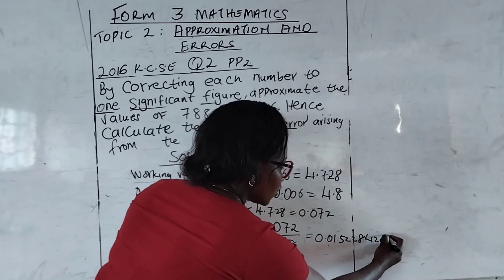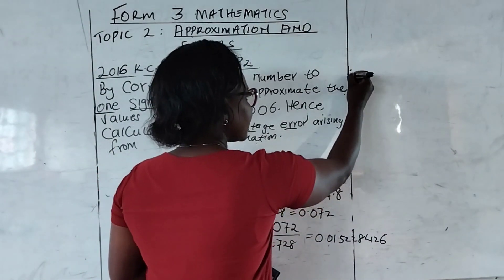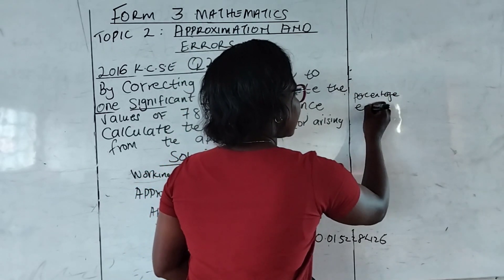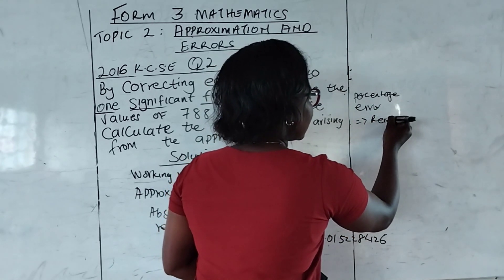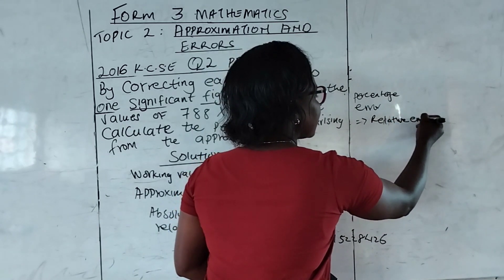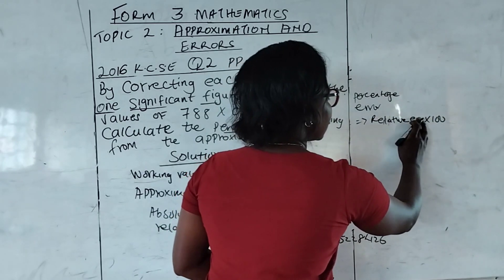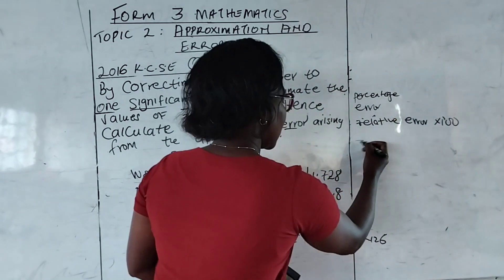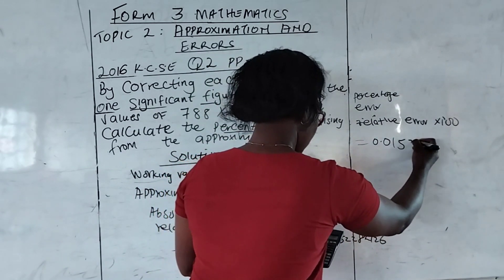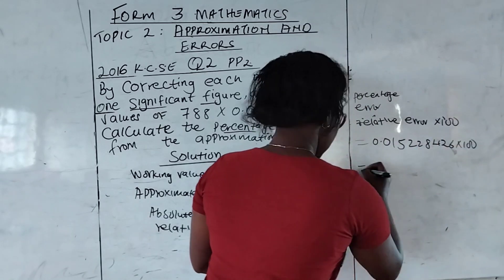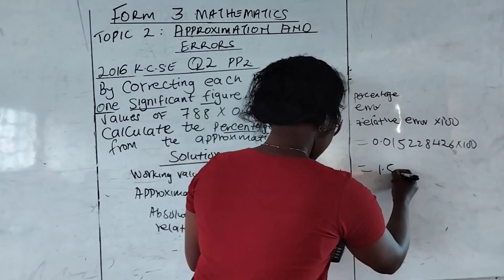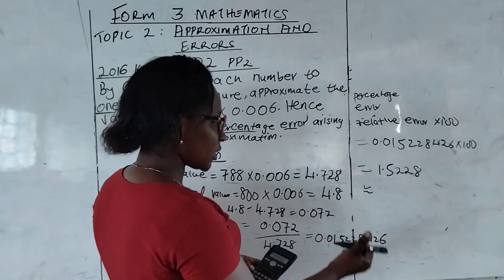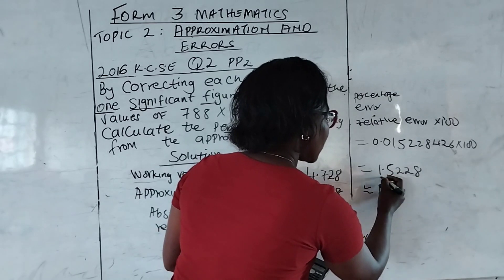Then our percentage error is going to be our relative error multiplied by 100. And this error is going to be 0.0152284 multiplied by 100. And our answer is 1.5228. We can have our answer in four significant figures and so we have 1.523%.